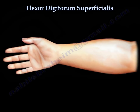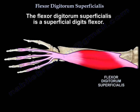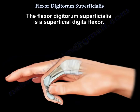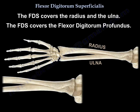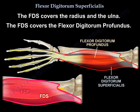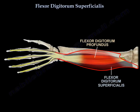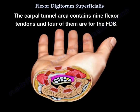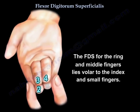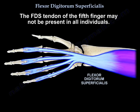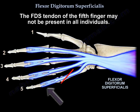The flexor digitorum superficialis is a superficial digit flexor. It covers the radius and the ulna, and it covers the profundus. The carpal tunnel area contains nine flexor tendons; four of them are for the flexor digitorum superficialis. The superficialis for the ring and middle fingers lies volar to the index and small fingers. The flexor digitorum superficialis tendon of the fifth finger may not be present in all individuals.